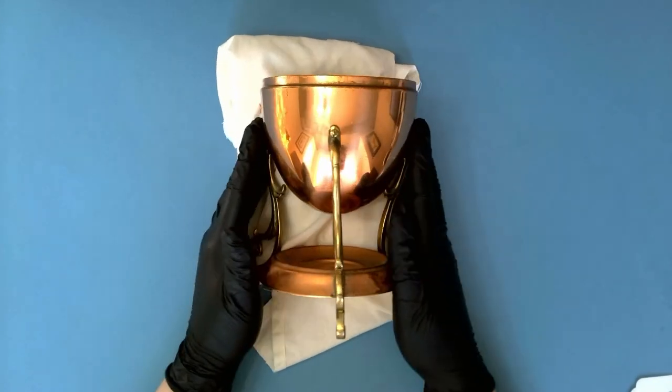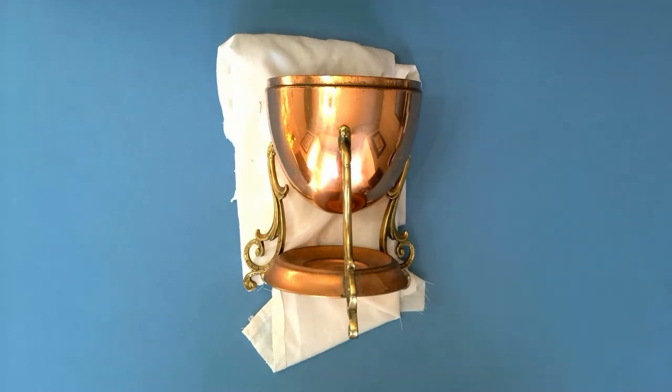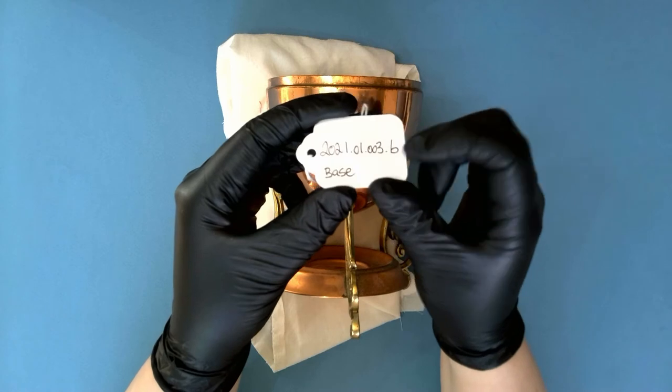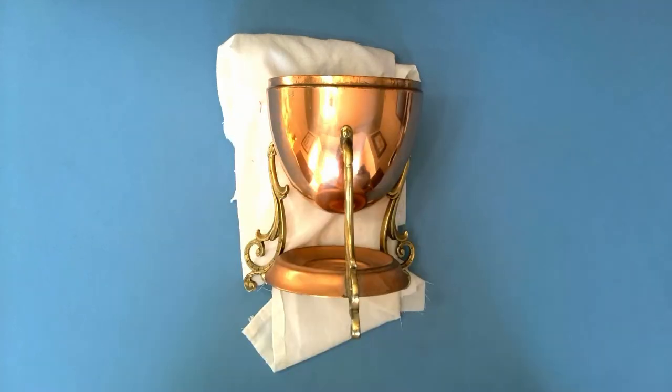I'm going to put down some cushioning so my object is not rolling around while I'm trying to put the tag on. On my tag you'll notice I have the object accession number and the object name, which in this case is just base.